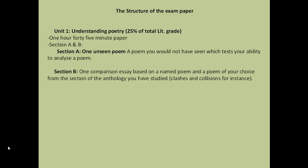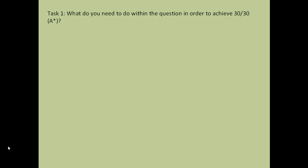In our previous video, section A, we looked at how to answer the unseen poem, and I recommend you look back at that if you've not seen it already. Today's video will focus on section B, which — now that the exam has changed slightly — you have one comparison essay based on one named poem. There are no other choices. Previous years you had a choice of a couple of questions; this year it's one question with one poem which is named, and you can then compare that with a poem you think is best suited.